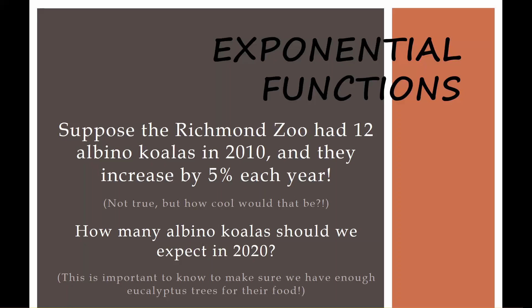We are going to consider this problem. Suppose the Richmond Zoo had 12 albino koalas in 2010 and they increased by 5% each year. Our two questions are: how many albino koalas should we expect in 2020, and how long until our number of albino koalas is up to 40?